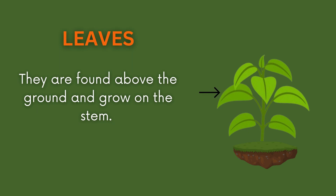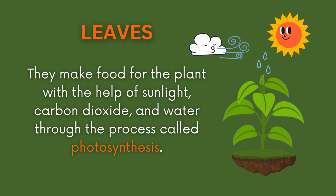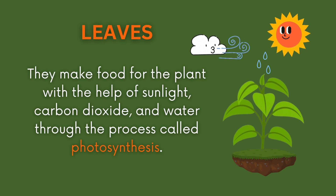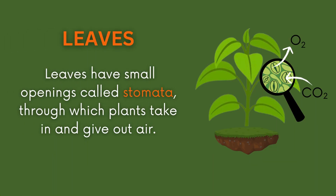Leaves make food for the plant with the help of sunlight, carbon dioxide, and water through the process called photosynthesis. Leaves have small openings called stomata, through which plants take in and give out air.